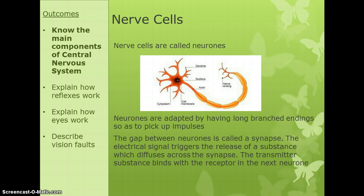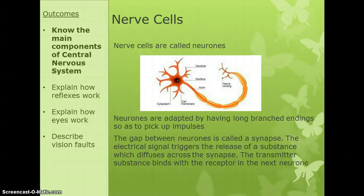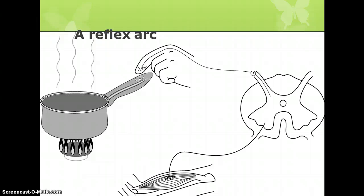There are gaps between neurons called synapses. Once the electrical signal reaches the end of a neuron, it causes the release of a chemical substance which crosses the gap until it reaches the next neuron, triggering an electrical signal in that neuron. So: electrical signal down the neuron, chemical released across the synapse, next neuron picks up the chemical and sends its own electrical signal.